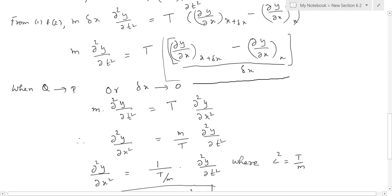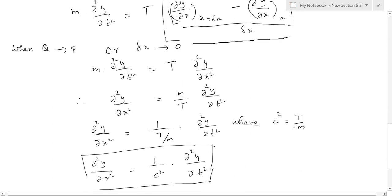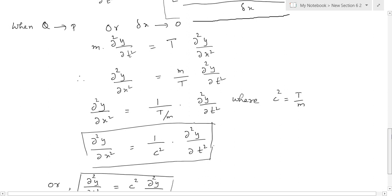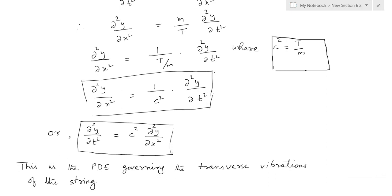This is the wave equation representing the displacement of the transverse vibrations. Simplifying and writing it in standard form, we take T to the left-hand side and express it as ∂²y/∂x² = (1/c²)·(∂²y/∂t²), or equivalently ∂²y/∂t² = c²·(∂²y/∂x²). This is the partial differential equation governing the transverse vibrations of a stressed string.